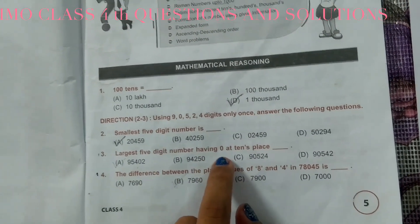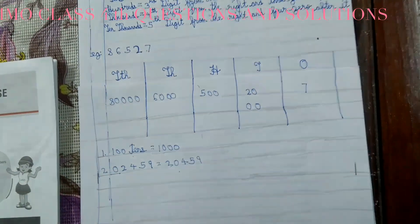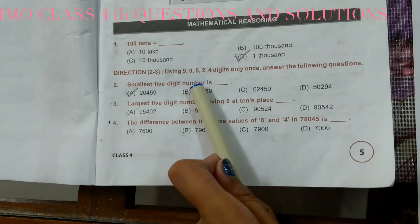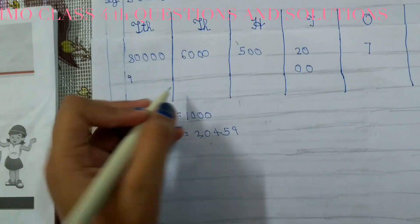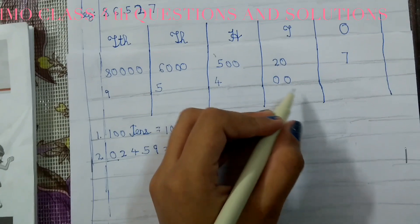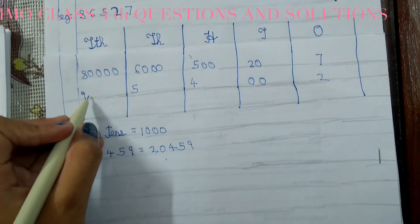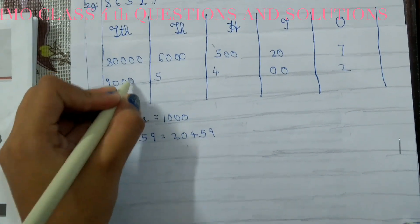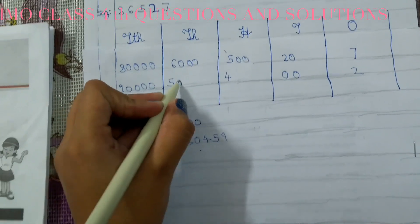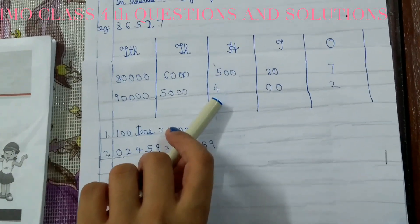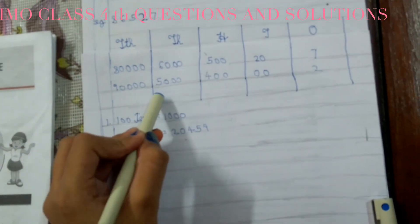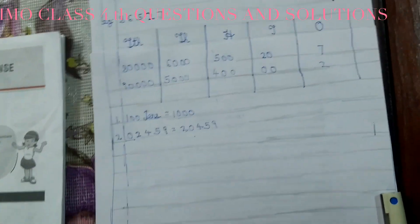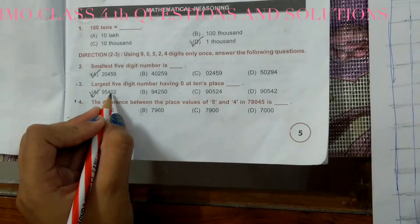The third question: largest five-digit number having zero at the tens place. We write zero at the tens place in the table, then arrange the remaining digits in descending order: 9, 5, 4, and 2. So the number is 95402. The answer is A, 95402.